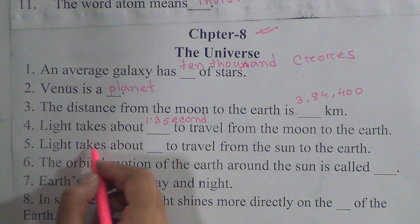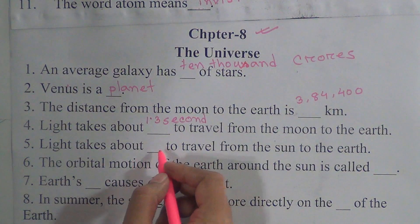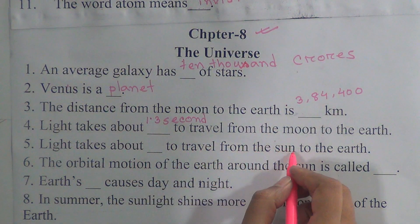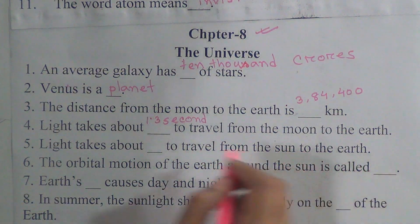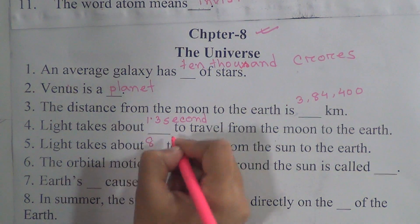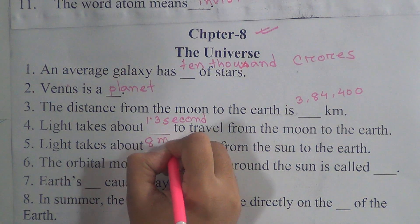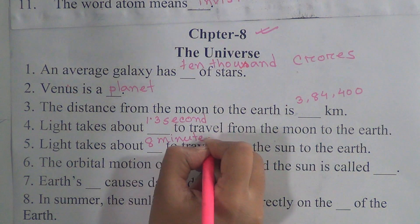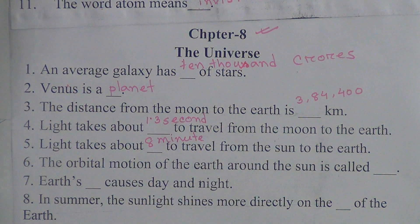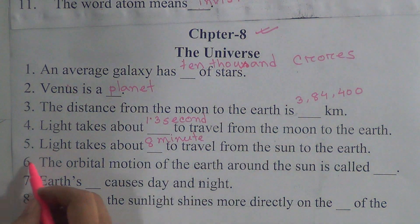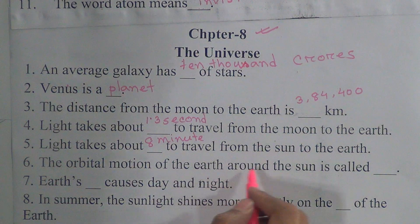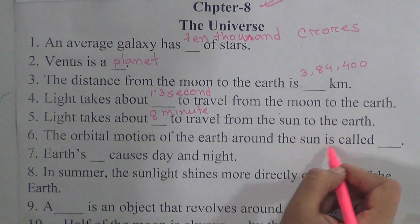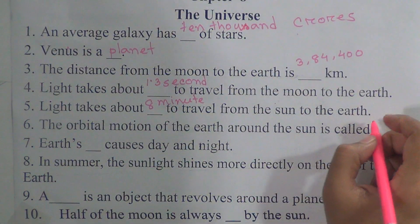Number five: light takes about 8 minutes to travel from the sun to the earth. Number six: the orbital motion of the earth around the sun is called revolution.